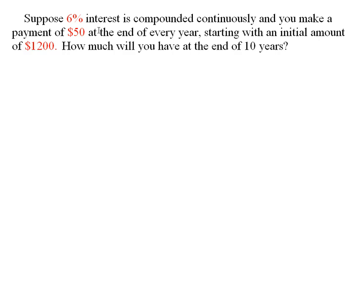This is a lot like the problem in the book, just change the numbers. Suppose that interest is 6% compounded continuously and you make a payment of $50 at the end of every year, starting with an initial amount of $1,200.